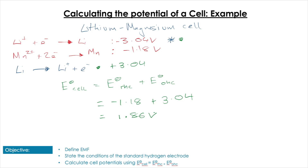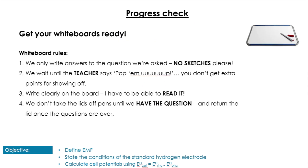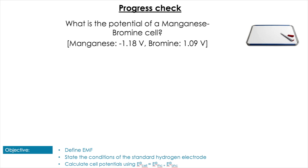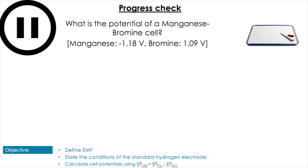The calculation itself is not particularly difficult. The main skill is identifying your two half-equations and which direction each goes - which one is oxidized, which one is reduced - and then flipping the sign of the oxidized equation. Now let's try a question: determine the potential of a manganese-bromine cell. Pause the video to have a go.